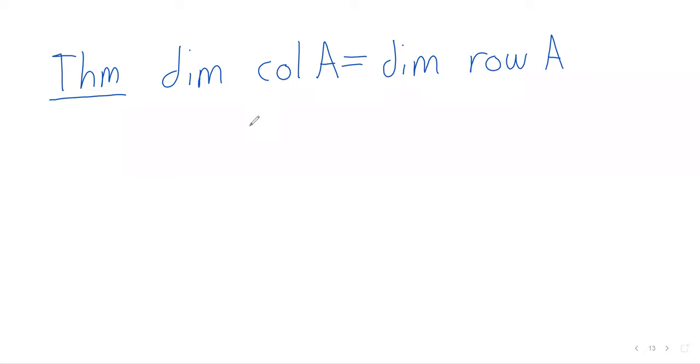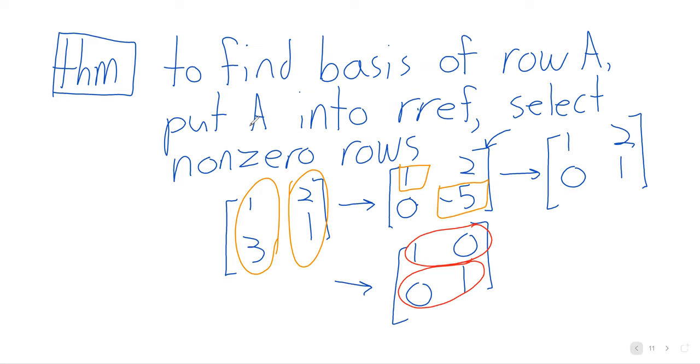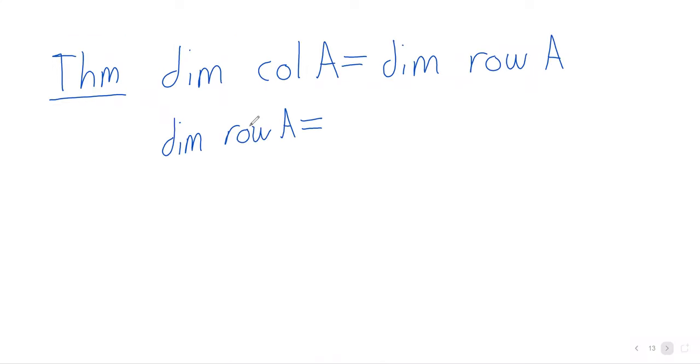The dimension of the column space of A equals the dimension of the row space of A. So this comes immediately from the fact that the dimension of the row space, what did I say to do? I said to put A into reduced row echelon form and select the non-zero rows. So it's the number of non-zero rows after row reduction.